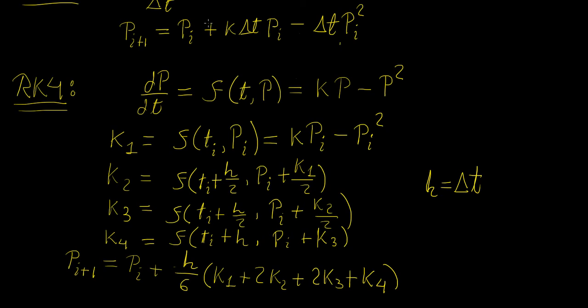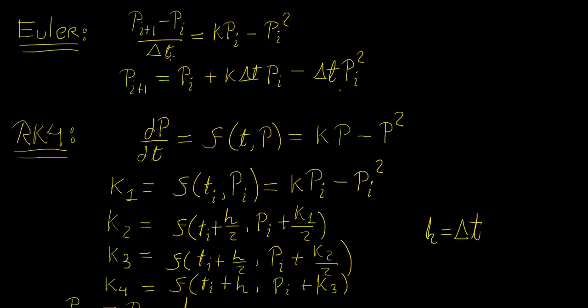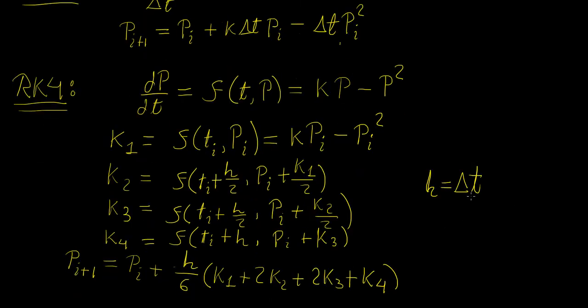Notice that h is just equal to the step size delta t. So essentially if we define delta t for Euler method, that's the same step size that we're going to use for this one. This is essentially your equations, this is what you will put inside of a loop.